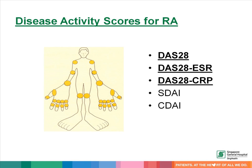There are also validated disease activity scores for rheumatoid arthritis, including the DAS28 score, SDAI, and CDAI. Adopting a treat-to-target approach, these disease activity scores help the physician to adjust medication accordingly.